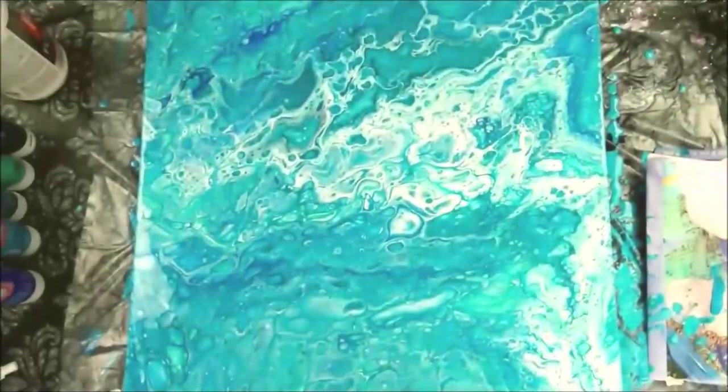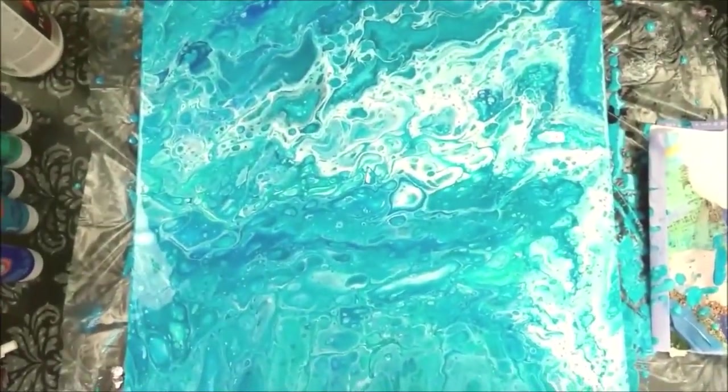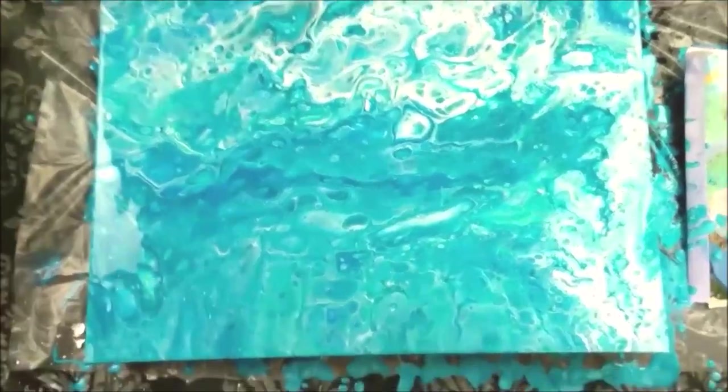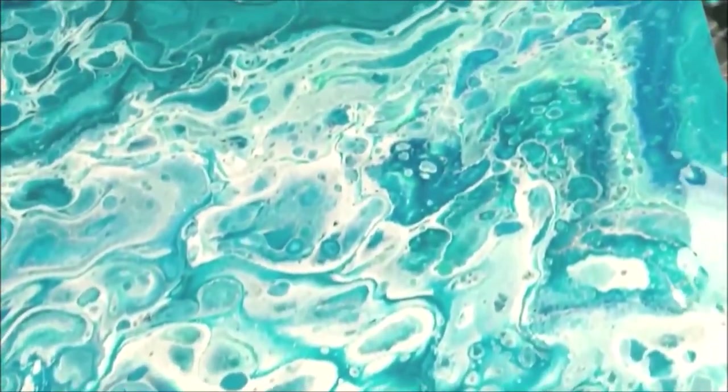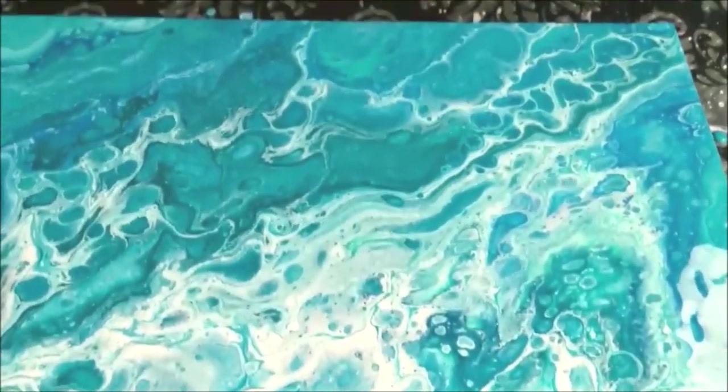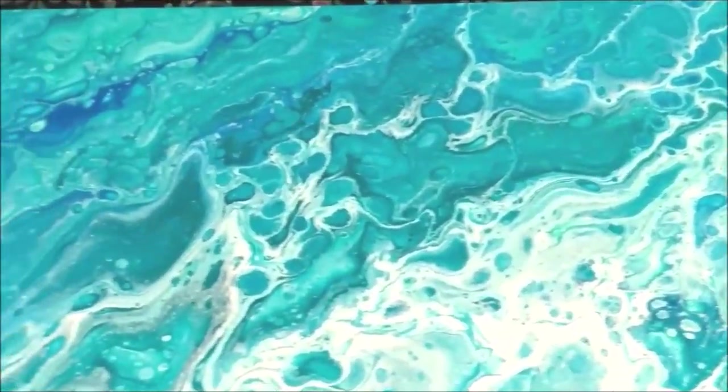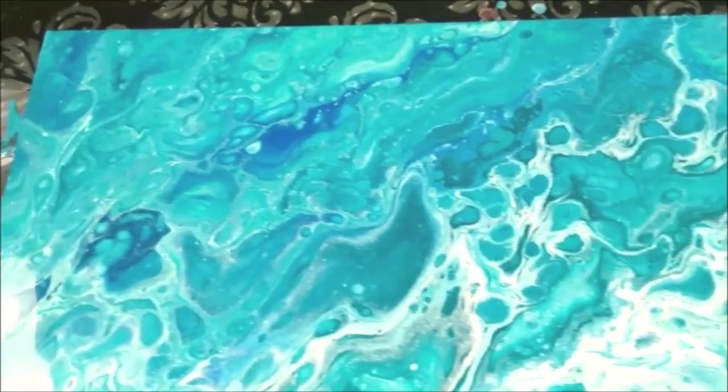And here is the finished painting. I'm going to bring you down for a close-up. We've got a nice mix of both large cells and smaller cells. Looks like bubbles and waves and ripples on the water. I love these blues and greens together, they always make for such a pretty painting.